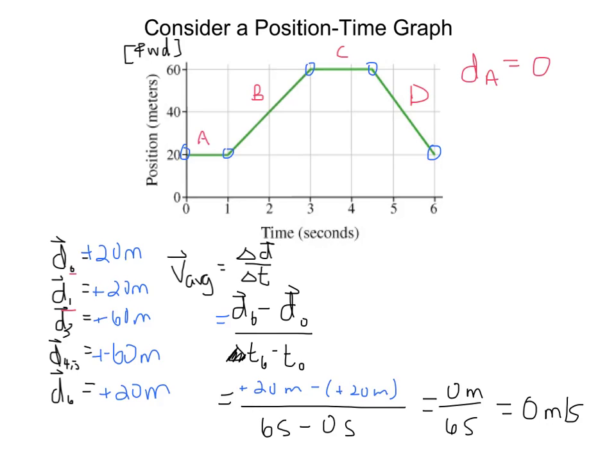And we can tell that by looking at the graph because it's a horizontal line. So if it's a horizontal line, we know that we're getting a distance of 0 meters.